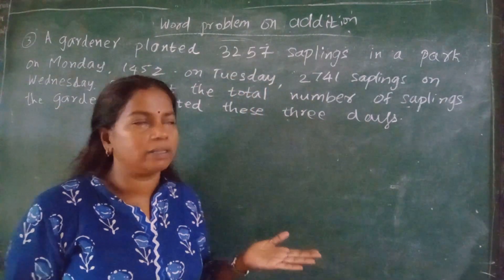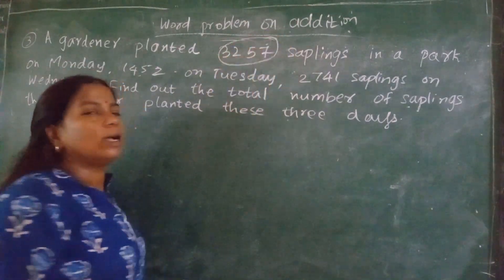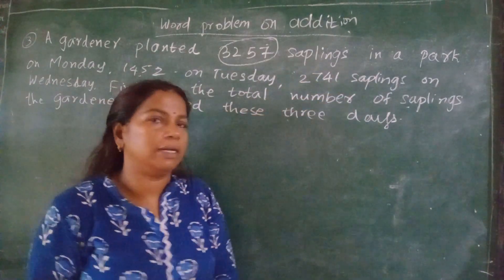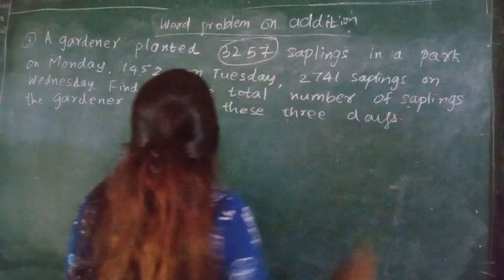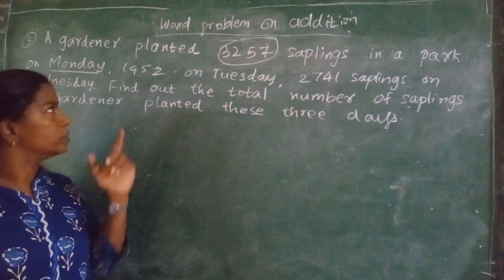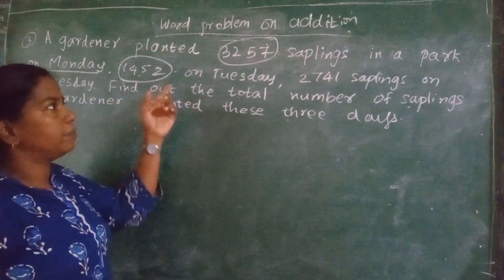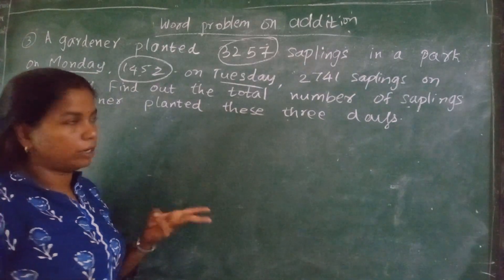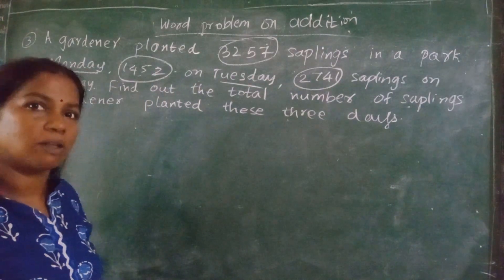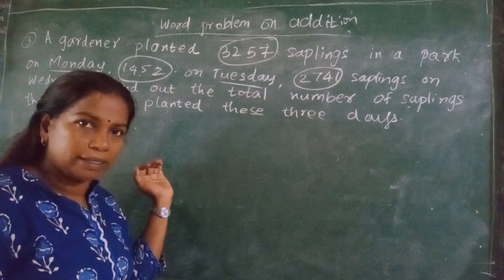Understood the question? The gardener planted 3,257 saplings on Monday in the park. Secondly, 1,452 saplings on Tuesday. Then on the third day, 2,741 saplings on Wednesday. Three days he did it. Now we will put it in the steps.